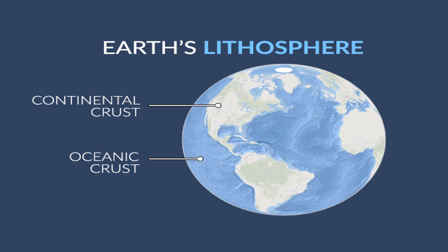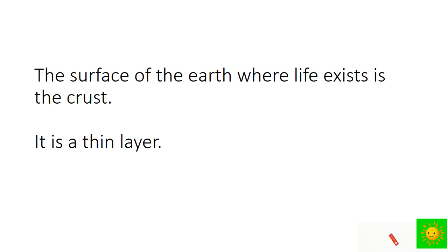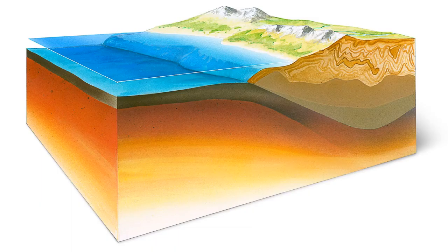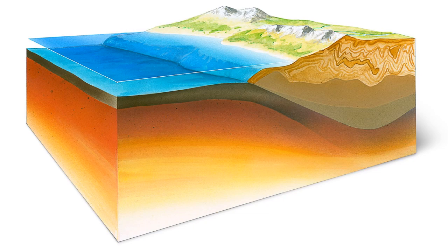First one, crust. The surface of the earth where life exists is the crust. When compared with the size of the earth, it is a thin layer. Mountains, plains and oceans are found on the crust. Its thickness varies from place to place.